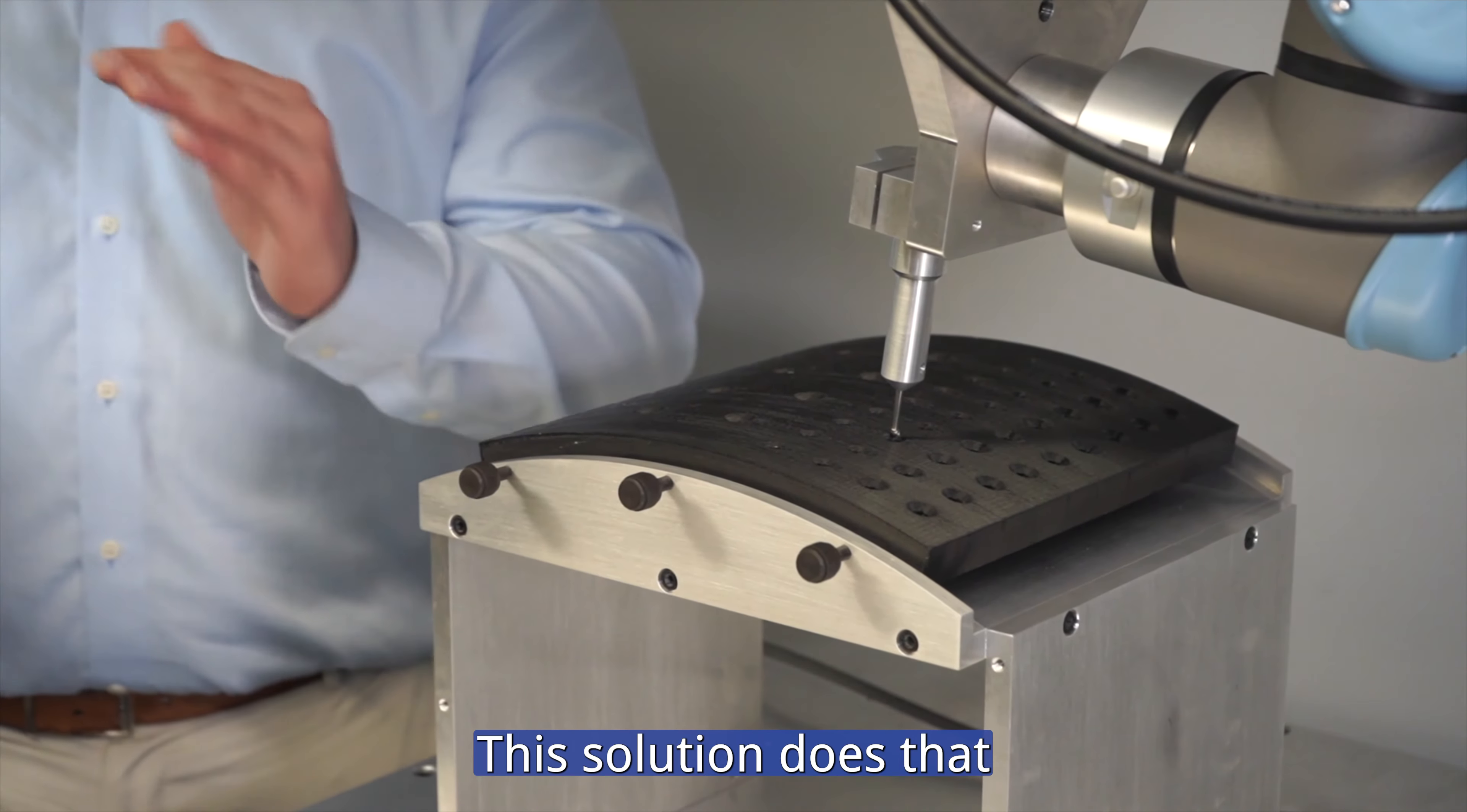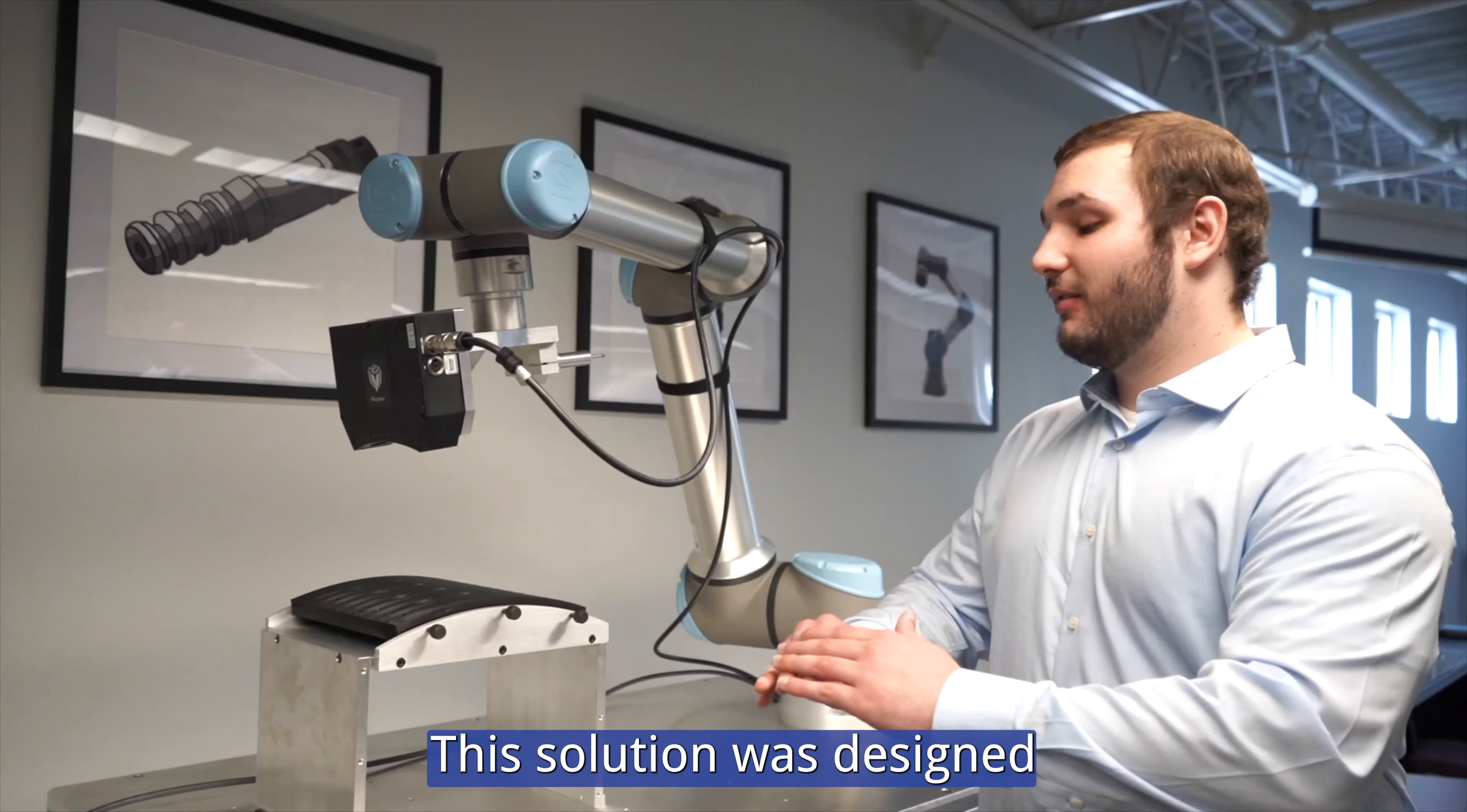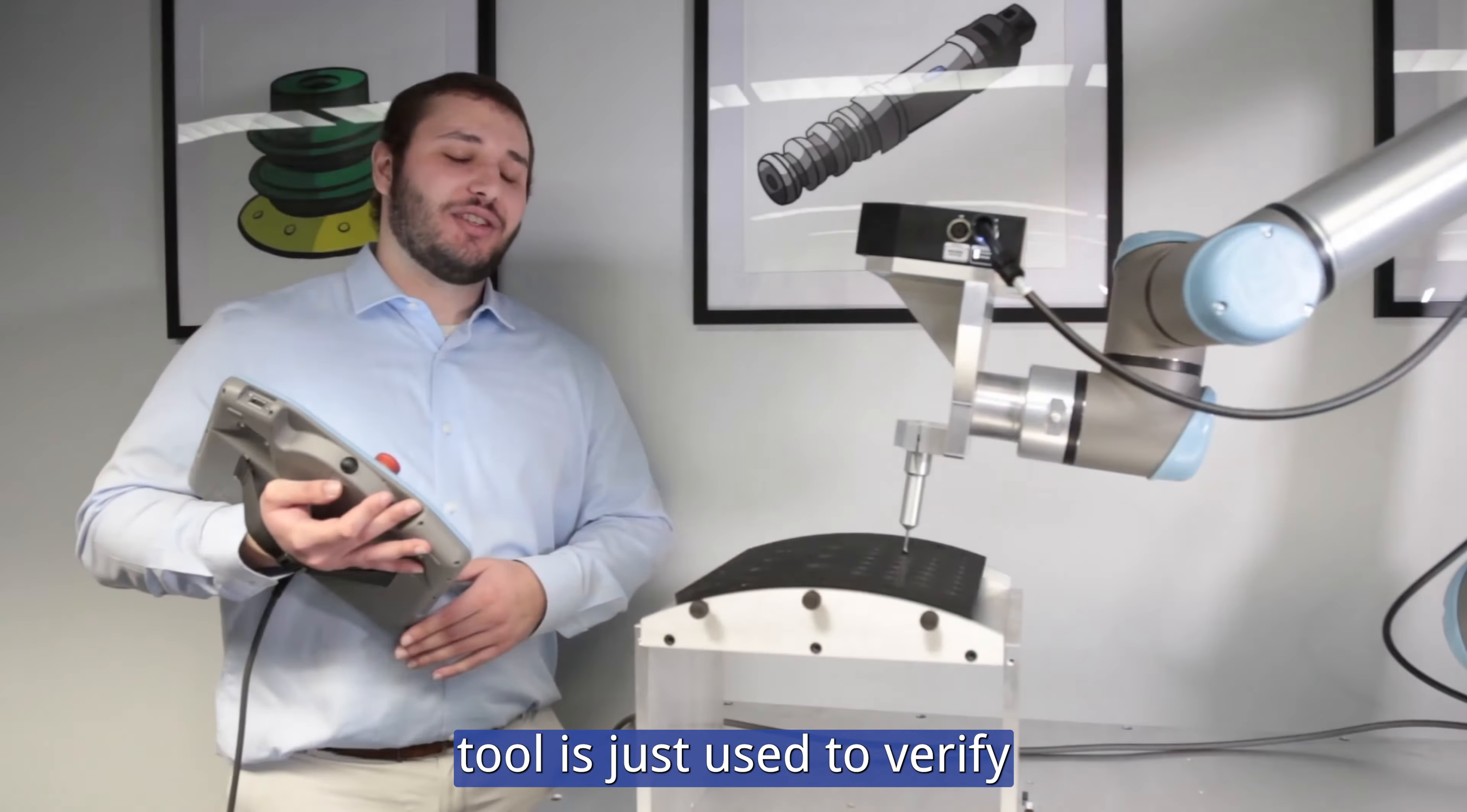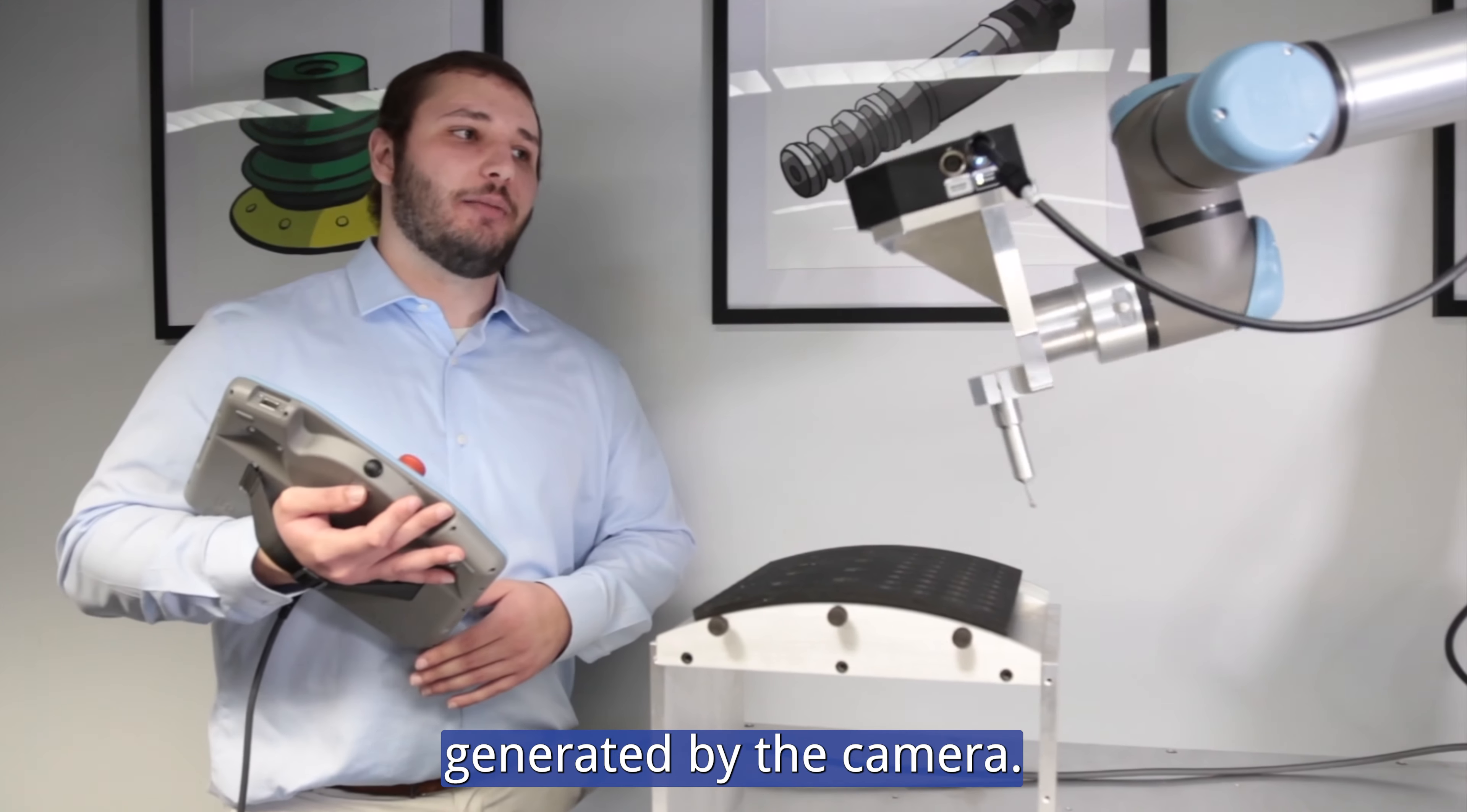This solution does that with a Universal Robotics UR10E robot, a LMI 3D camera, and a probe. This solution was designed as a proof of concept, so the probe on this end-of-arm tool is just used to verify the positions generated by the camera.